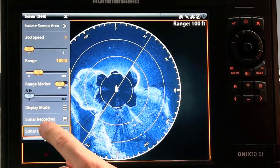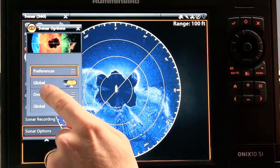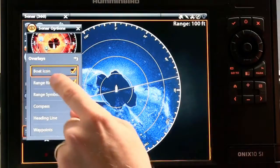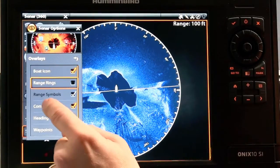This same settings menu allows us to adjust other 360 imaging display parameters. To do so simply select sonar options followed by overlays. This overlays menu allows us to add or remove things like range rings or the compass overlay or the boat icon.